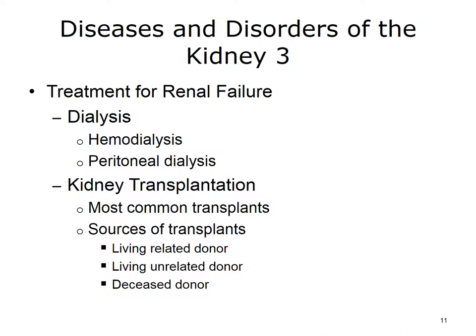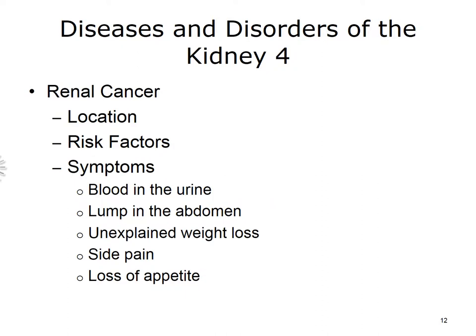Kidney cancer is also referred to as renal cancer. It forms in the lining of the tiny tubes inside your kidneys. It happens most often in people over 40. Risk factors include being over 40 years old, having certain genetic conditions, and misusing pain medicine. Symptoms include blood in your urine, a lump in your abdomen, unexplained weight loss, pain in your side, and loss of appetite.